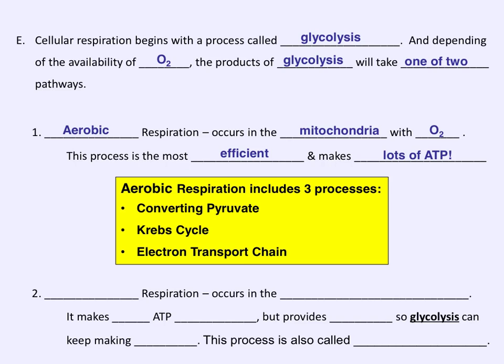The prefix 'an' means without. The name of the other pathway is anaerobic respiration — can you guess what that means? Anaerobic respiration occurs in the cytoplasm without any oxygen available. It makes no ATP at all, but what it does do is provide NAD+ for glycolysis to keep making a little bit of ATP without oxygen present. This process of anaerobic respiration is also called fermentation.